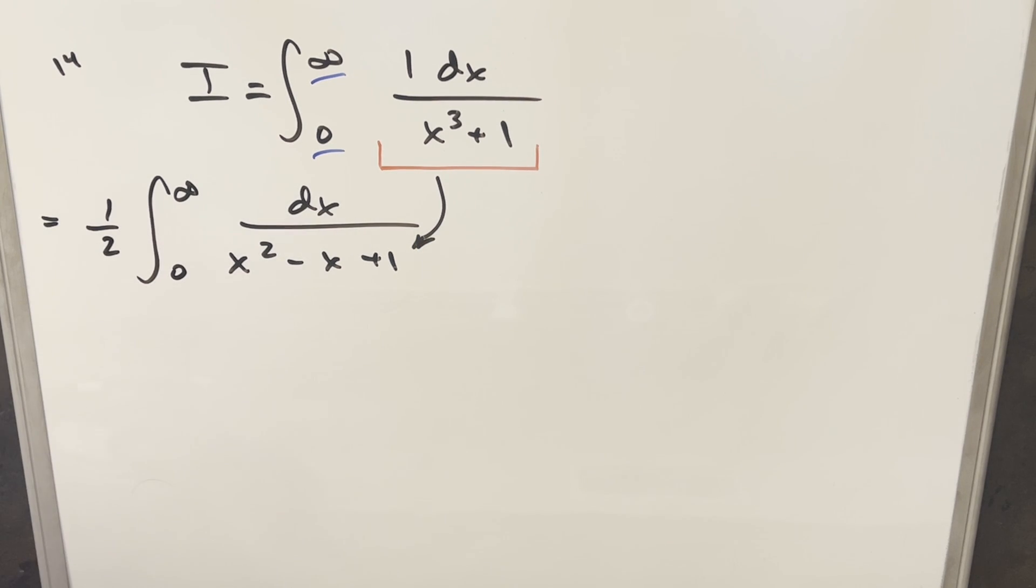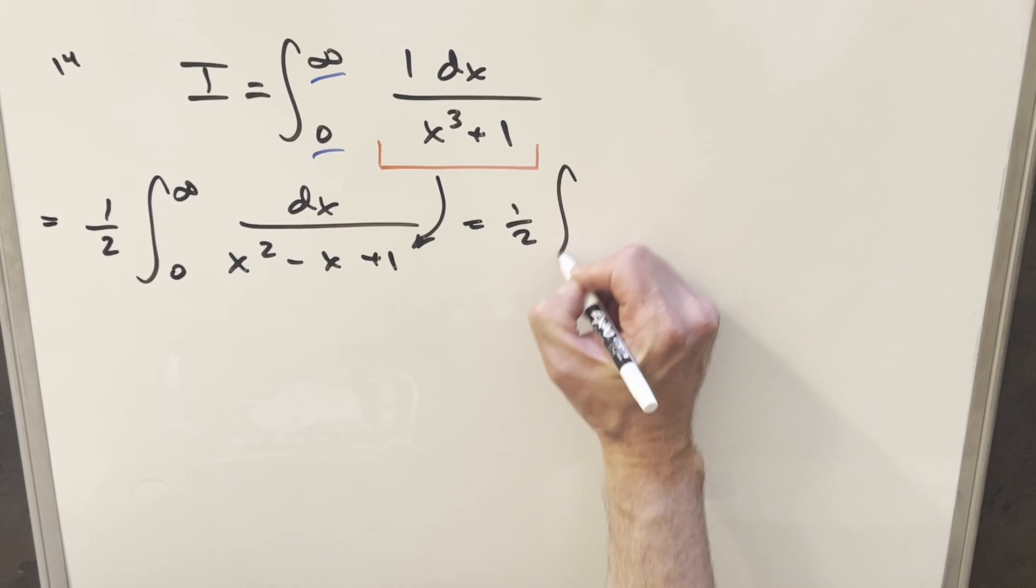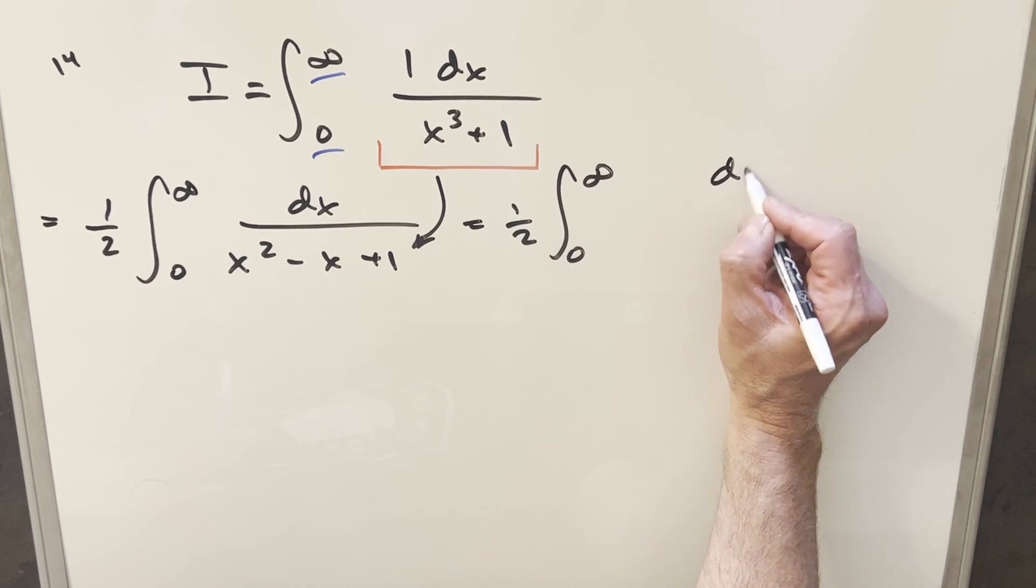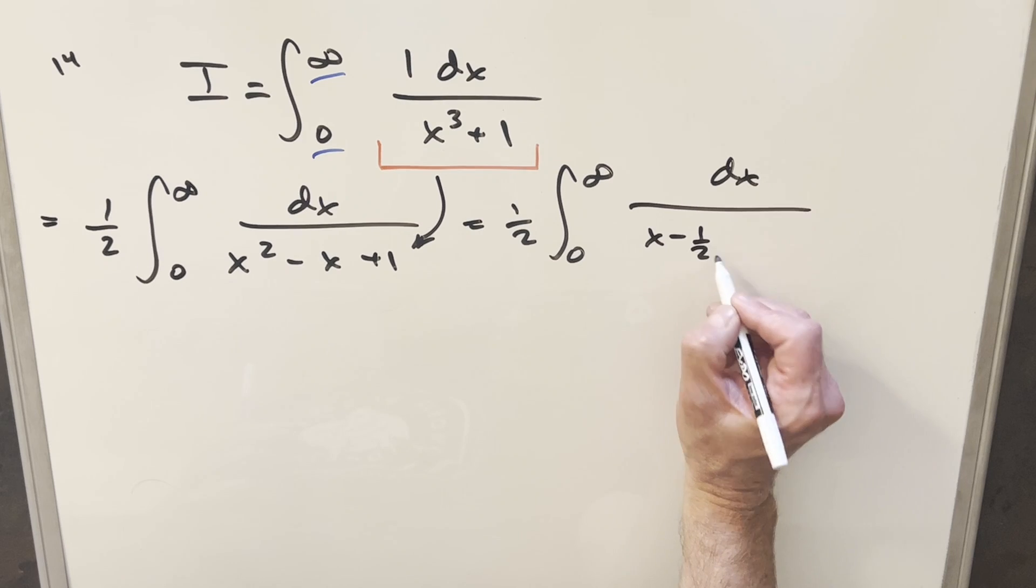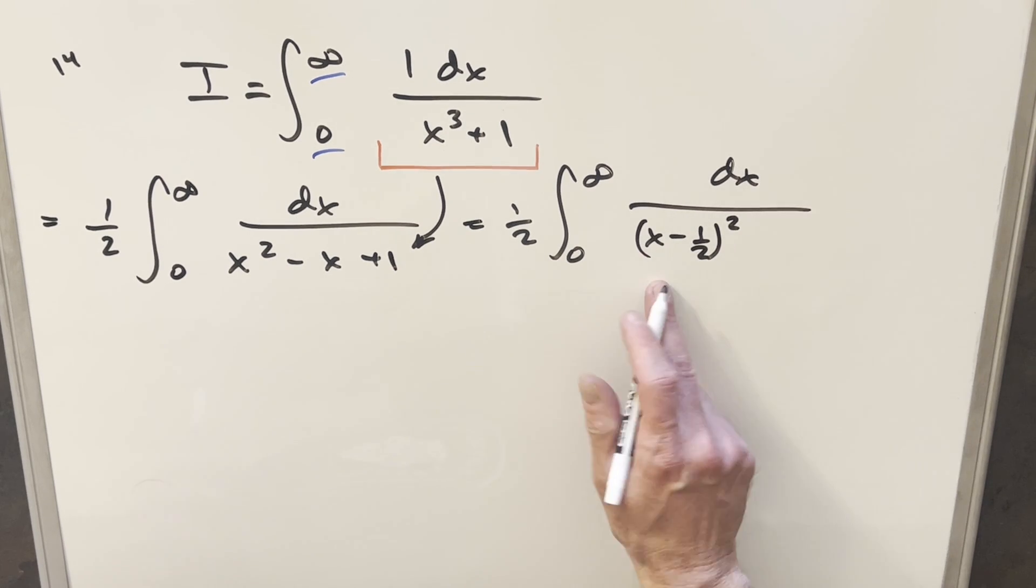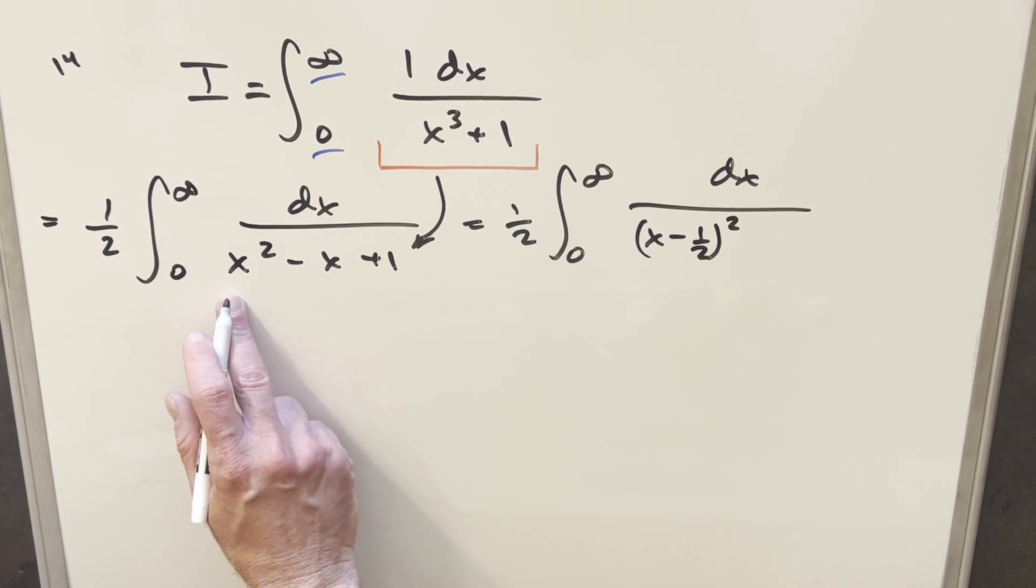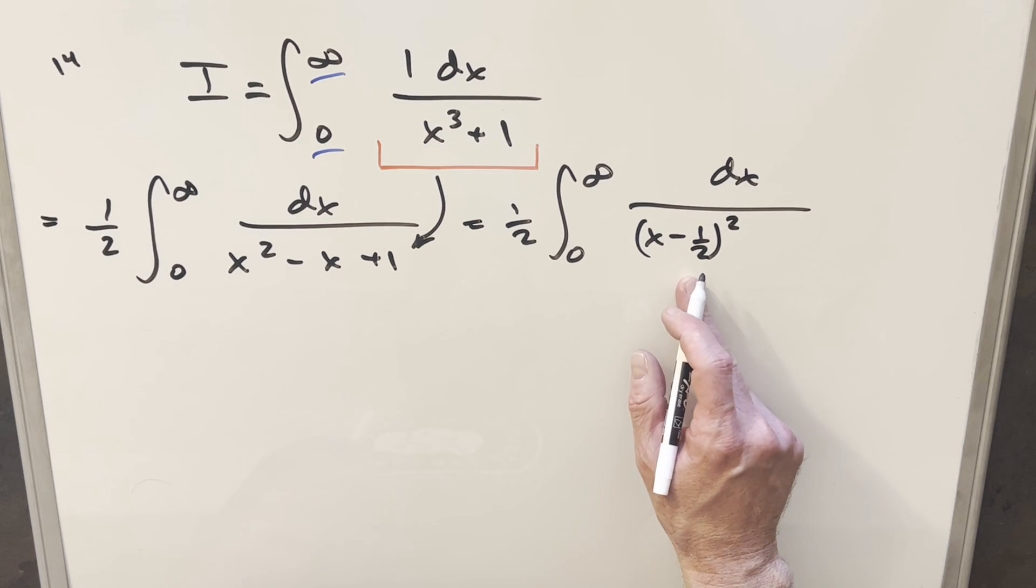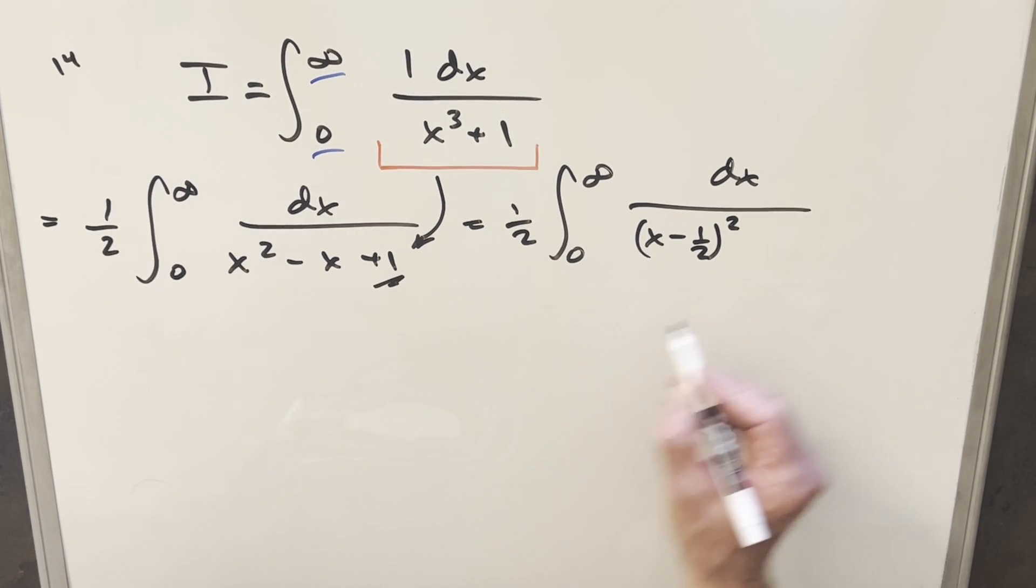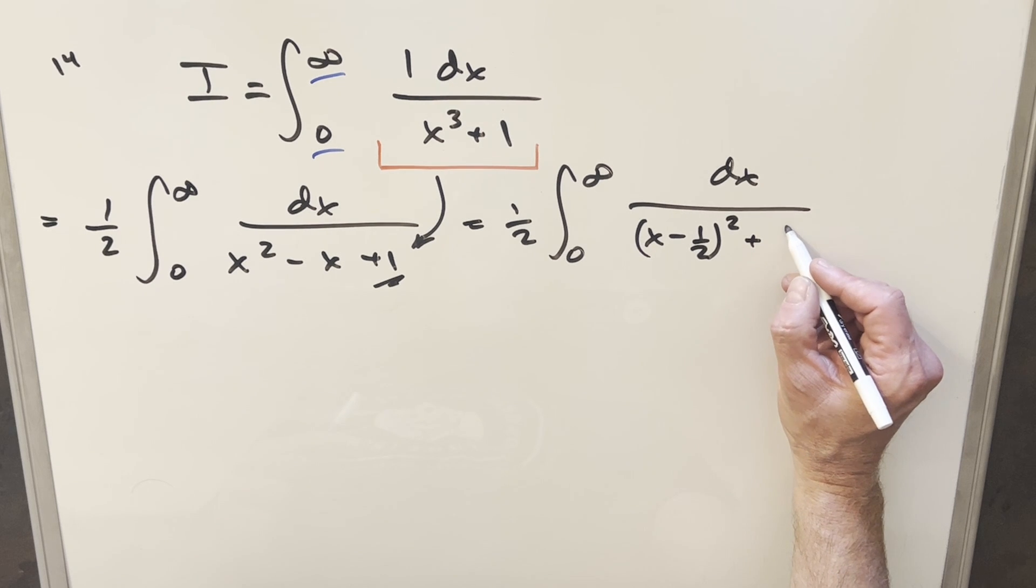But anyway, what we have here, we can complete the square on this. So let's just do this, and we'll bring over the bounds. We're going from 0 to infinity. Completing the square on this, what we can do is I can write this as x minus 1 half squared. Multiply that out, you get the x squared. Minus 1 half x minus 1 half x is minus x. The last term is going to be plus 1 fourth. In order so I don't change it so we can get our plus 1 back, I can write this as 3 over 4.